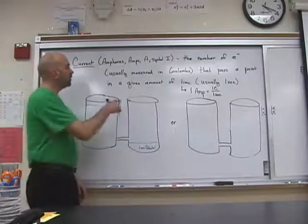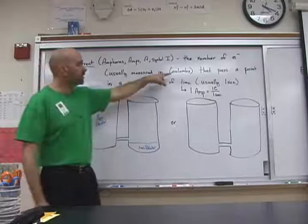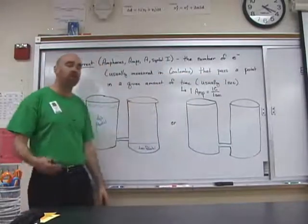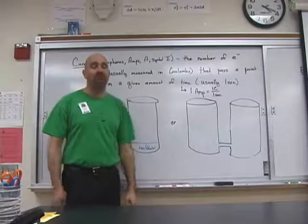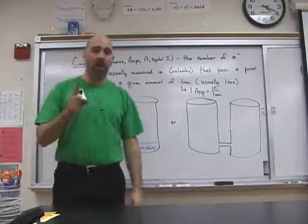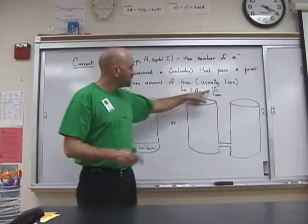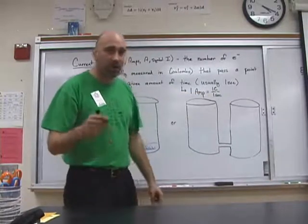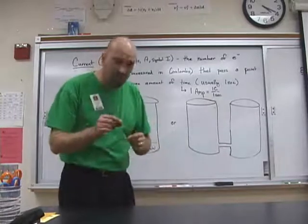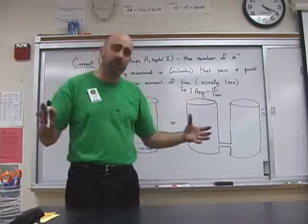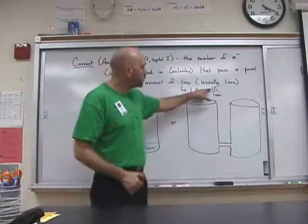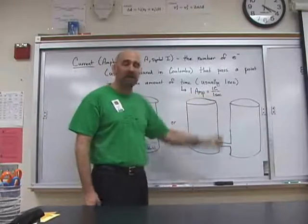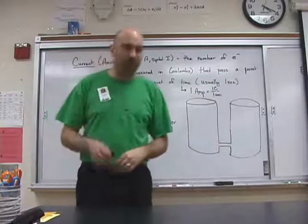And current is the number of electrons, which is usually measured in Coulombs, that pass a particular point in any given amount of time. And that's usually measured in one second. In fact, by definition, one amp is one Coulombs worth of charge, which, remember, an electron has an incredibly small charge. You have to get billions and billions and billions of electrons together to equal one Coulomb. So, that's a lot of electrons in one second whizzing past one particular point.